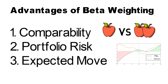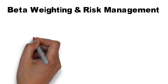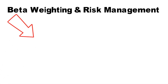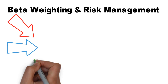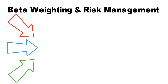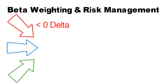Next, let's look at how beta weighting can help you manage your risk. It is important to have an overall directional assumption of the market around which you can build your portfolio — this can range from very bearish to very bullish. However, it can be hard to always have a clear directional bias, and being too directional can expose you to big risks. Therefore, it can be advantageous to stay delta neutral.